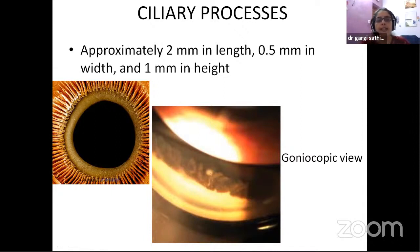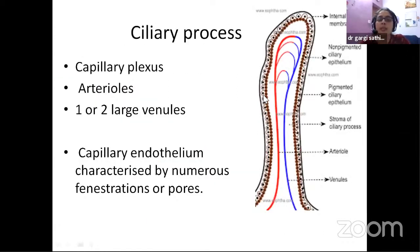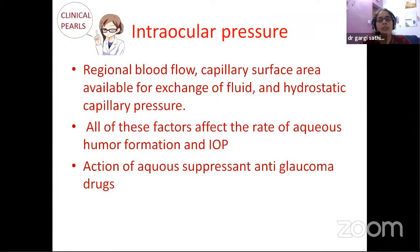Rarely, if the root of the iris is deficient — like in an iridodialysis — when you put a gonioscopy mirror through the deficient area where there is no iris, you may sometimes see the ciliary processes. The ciliary process contains all the layers — the epithelium, stroma — and has a capillary plexus with arterioles, draining venules, and the capillary endothelium has many fenestrations and pores. Intraocular pressure depends on the regional blood flow, the surface area, and the hydrostatic pressure there — all affecting aqueous humor production. Many antiglaucoma drugs which suppress aqueous humor, including carbonic anhydrase inhibitors, act on the capillaries and the epithelium there.